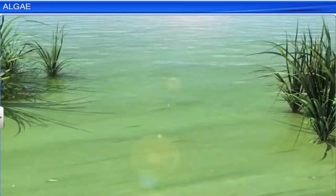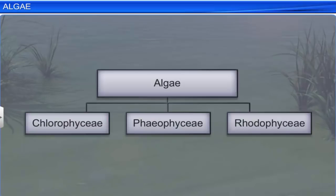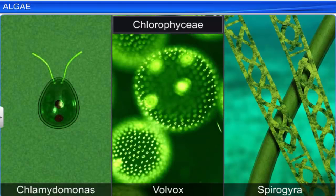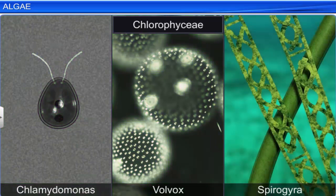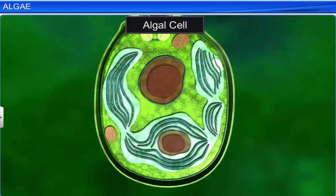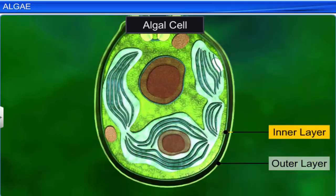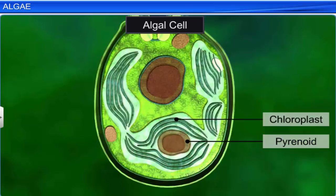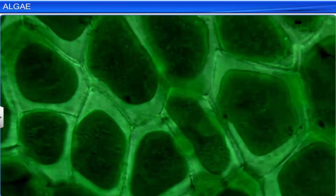Based on the type of pigment and the type of stored food, we can classify algae into Chlorophyceae, Phaeophyceae, and Rhodophyceae. Chlamydomonas, Volvox, and Spirogyra are some members of the class Chlorophyceae. They are commonly called green algae and can have a unicellular, colonial, or filamentous body. Their cell wall is rigid as the outer layer is made of pectose and the inner layer of cellulose. The cell has several chloroplasts that contain pyrenoids — structures that have starch and protein. In definite chloroplasts you can find the localized pigments chlorophyll A and B, that give the algae the color of green grass.